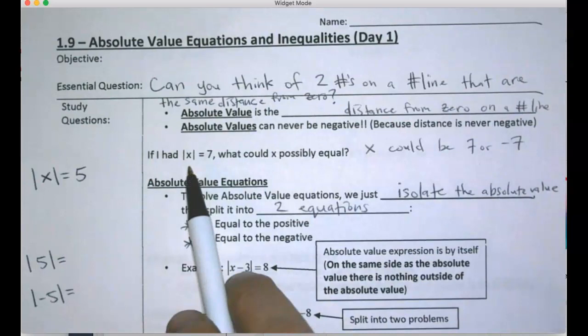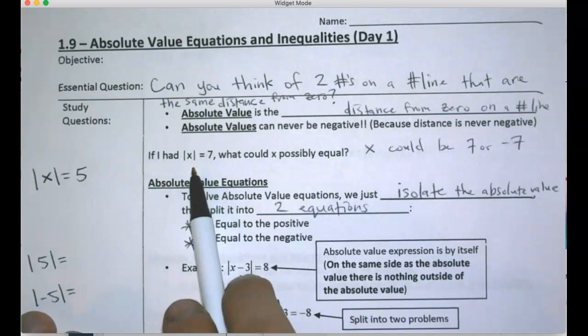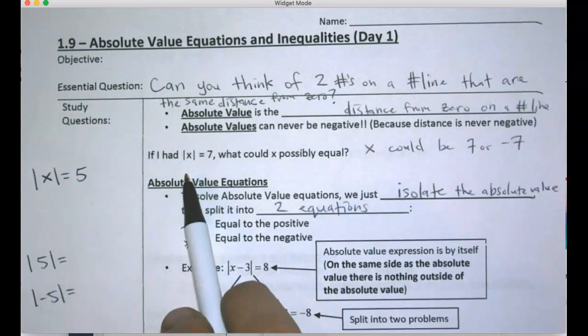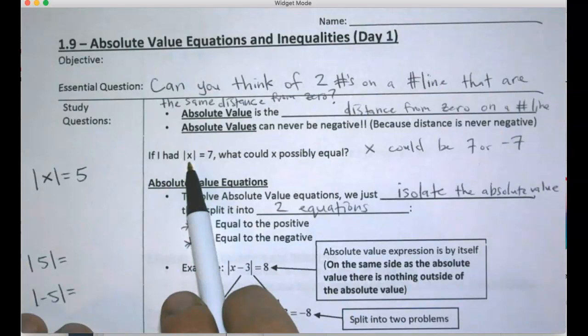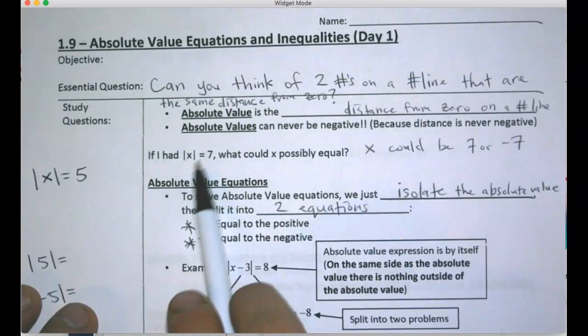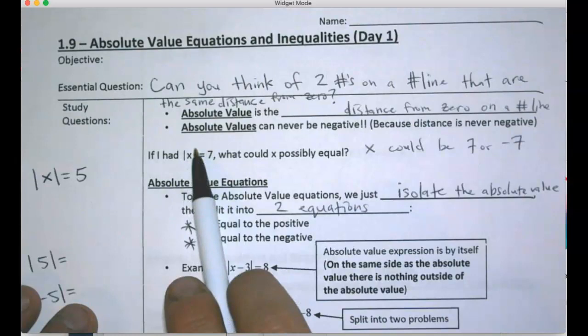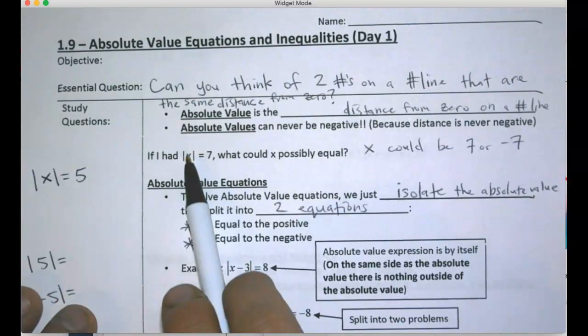These little vertical lines mean absolute value. If you see them, you say 'absolute value of x' in this case. Absolute value of x equals 7 means whatever's inside the absolute value is 7 spaces away from zero. So this might be 7 — a 7 is 7 units from zero — but it might be negative 7 because negative 7 is still 7 units away from zero. It's like a distance: 7 and negative 7 are the same distance from zero, so either could be what's inside.